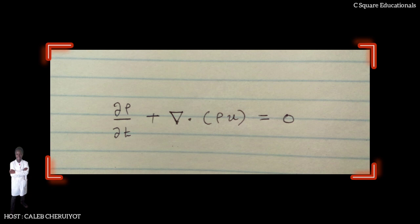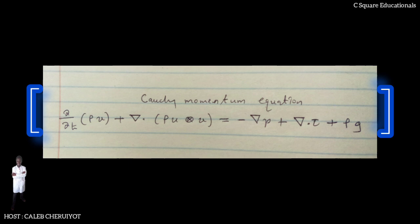This is the Cauchy momentum equation in conservation form: ∂/∂t(ρu) + ∇·(ρu⊗u) = -∇p + ∇·τ + ρg, where ⊗ is the outer product. The left side of the equation describes acceleration and may be composed of time-dependent and convective components. Also the effects of non-inertial coordinates, if present. The right side of the equation is, in effect, a summation of hydrostatic effects, the divergence of deviatoric stress and body forces such as gravity.